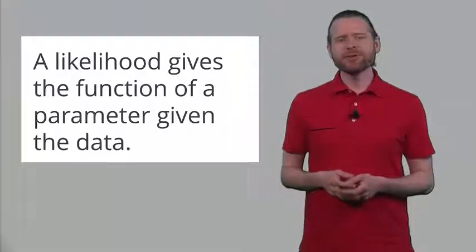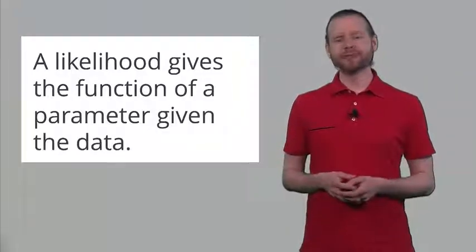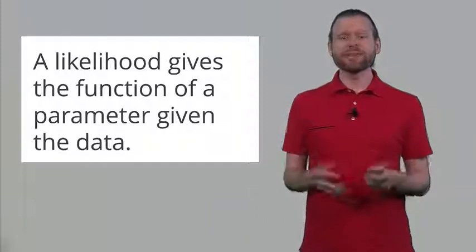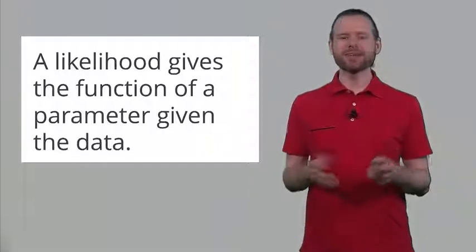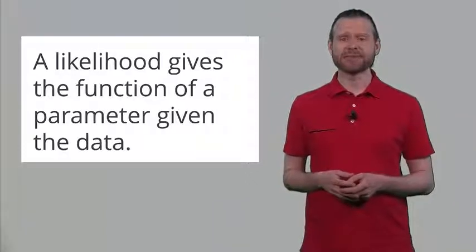In this lecture we'll talk about likelihoods. Likelihoods are a way to express the relative evidence for one hypothesis over another hypothesis. They can be very useful in themselves, but they also underlie a lot of Bayesian statistics, as we'll see in later lectures. A likelihood gives you the function of a parameter given the data. So when you've observed some data, you can plot the accompanying likelihood function and check how likely each hypothesis is.